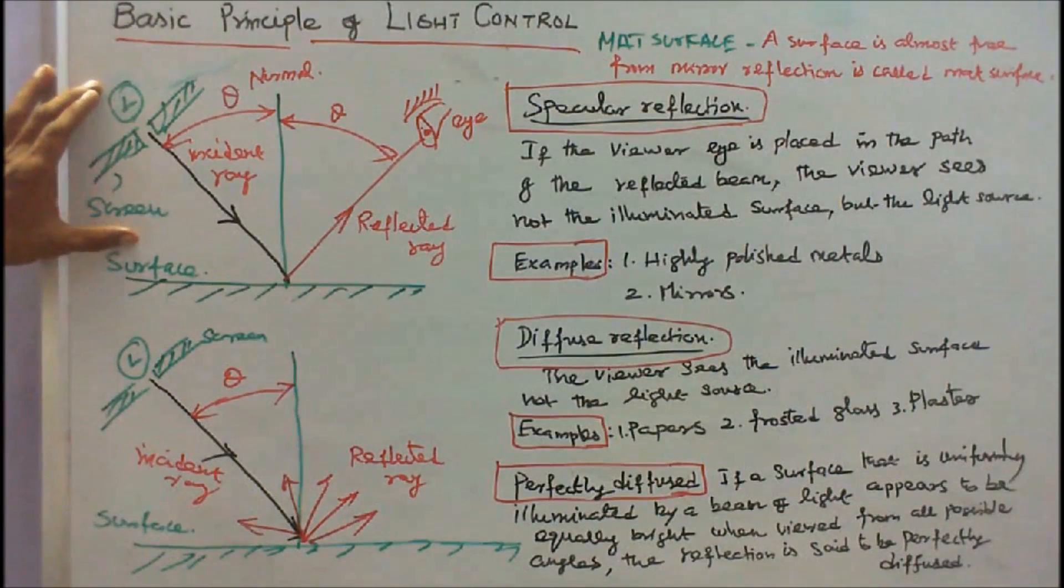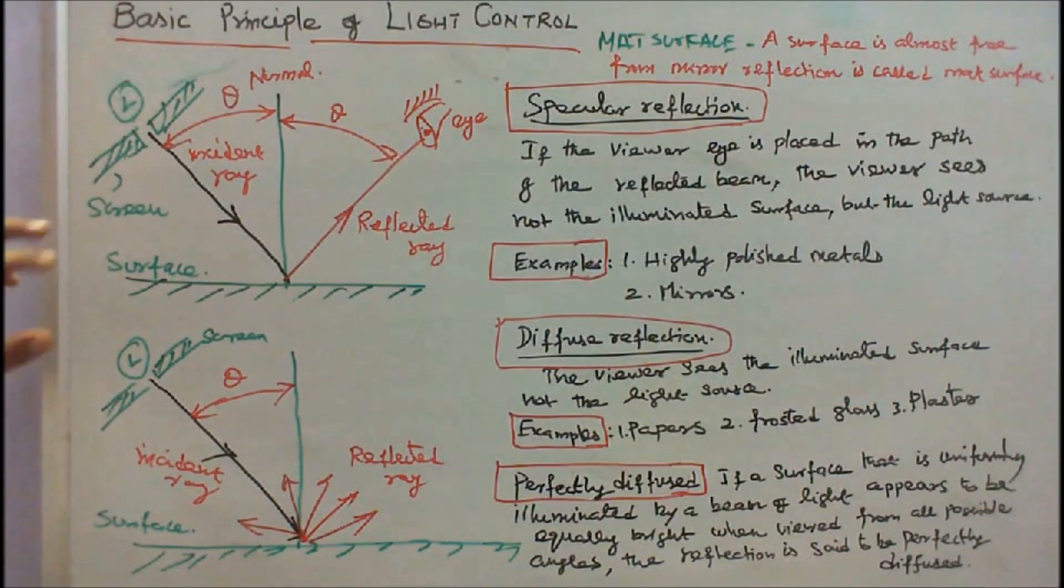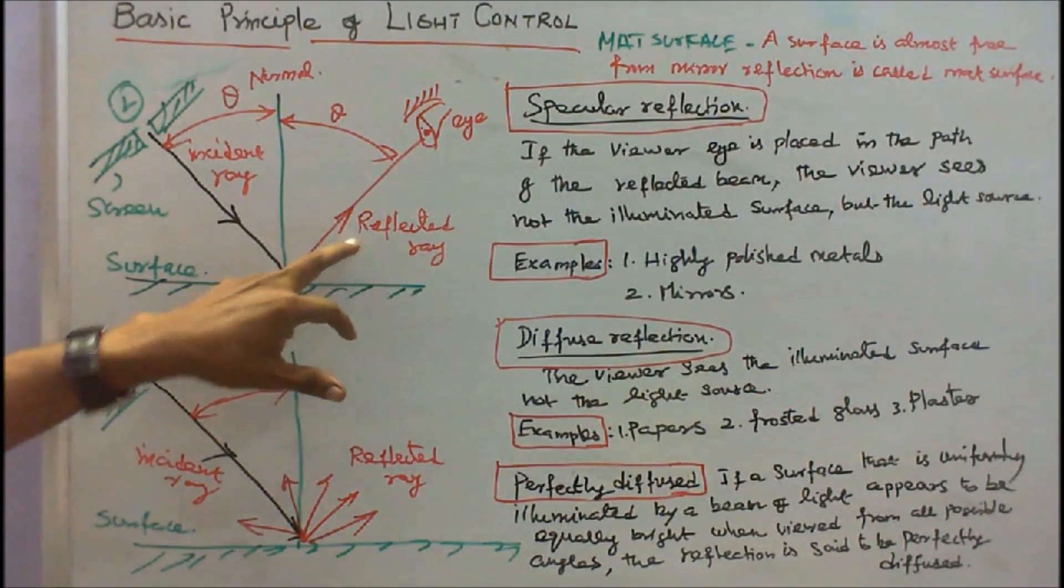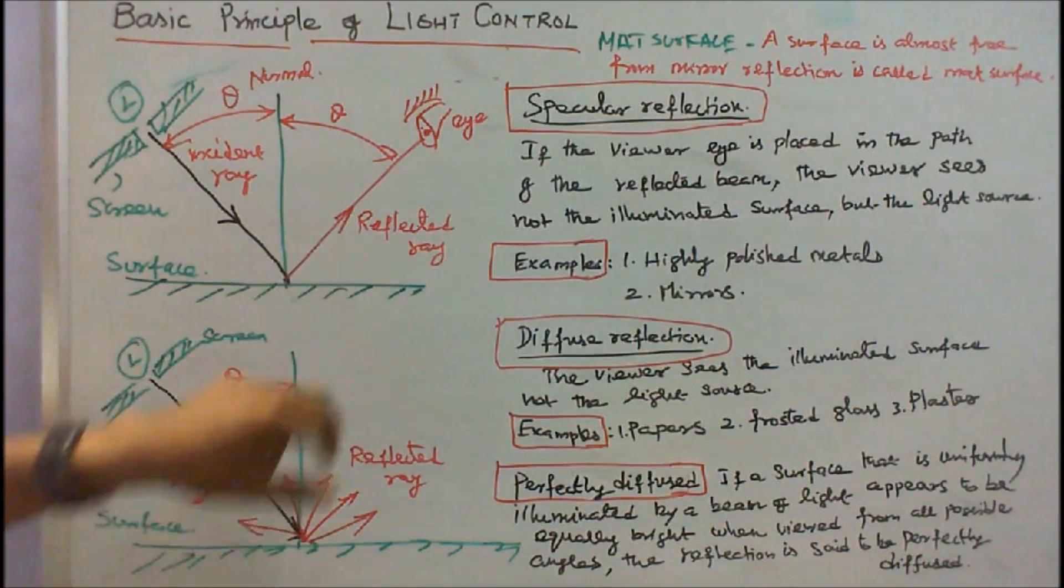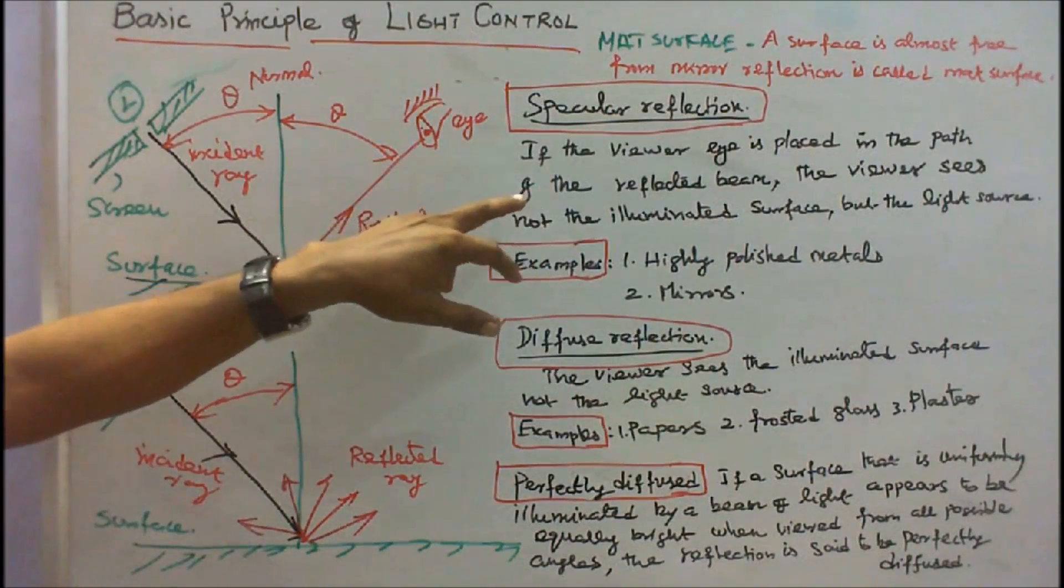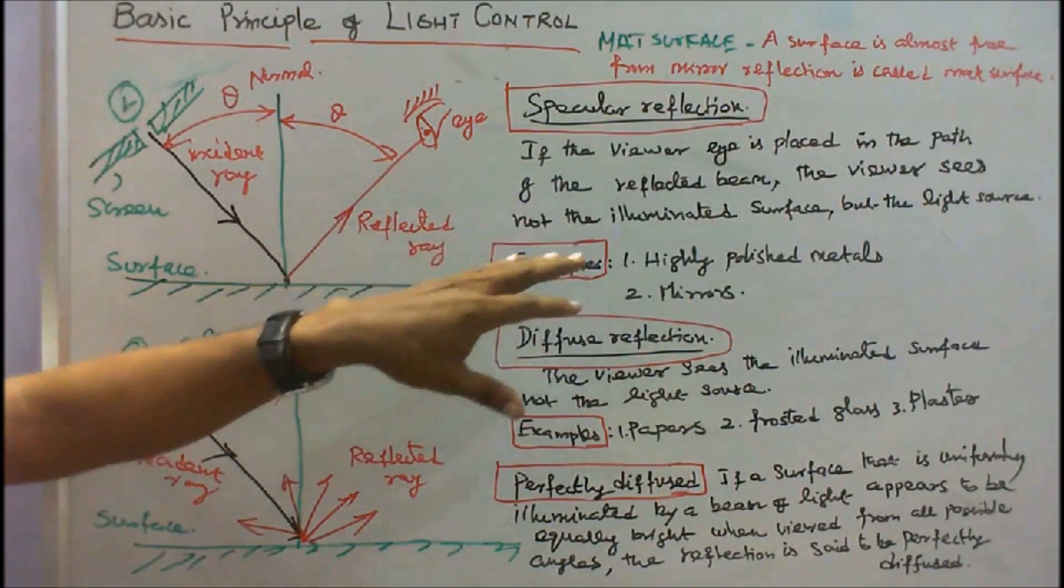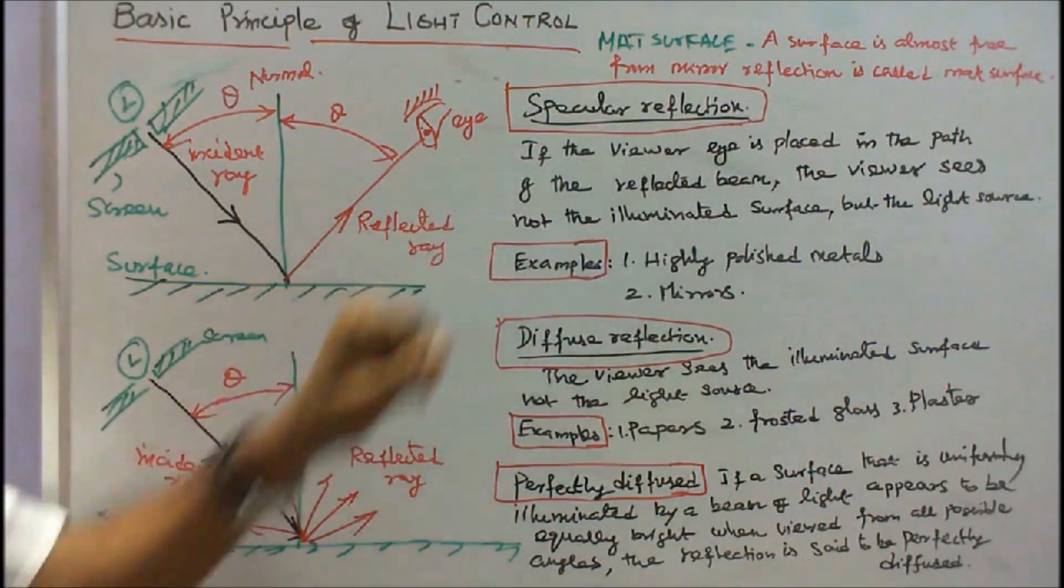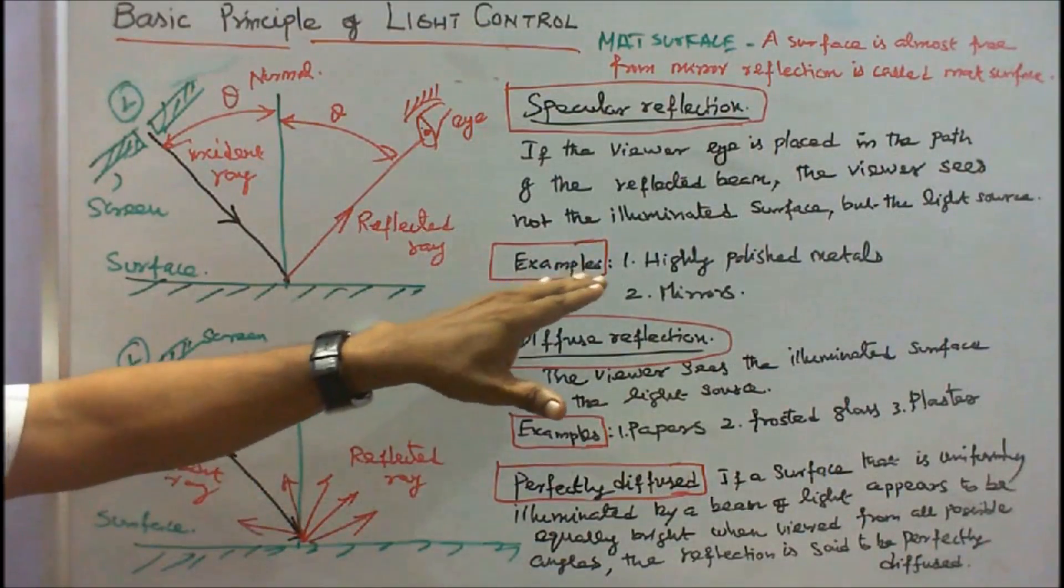This is a figure of specular reflection or mirror reflection. This is a light source, this is a screen. When the incident ray hits the surface, it gets reflected. This is a reflected beam. If the viewer's eye is placed in the path of the reflected beam, the viewer sees not the illuminated surface but the light source.